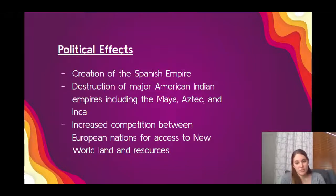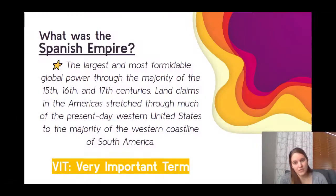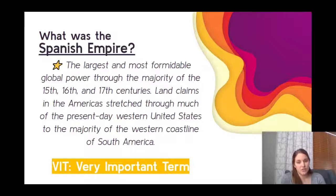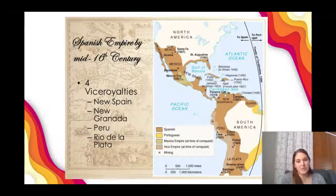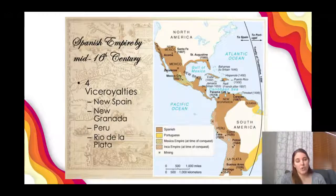We also see increased competition between European nations. In period one, the real focus is Spanish exploration, but as we move into period two, you'll see competition for other areas of the New World by the Dutch, the French, and the English primarily. The Spanish Empire is another very important term — it was the largest and most formidable global power through the majority of the 15th, 16th, and 17th centuries. Its land claims in the Americas stretched through much of the present-day Western United States to the majority of the western coastline of South America. Here you can see a map of the mid-16th century Spanish Empire.